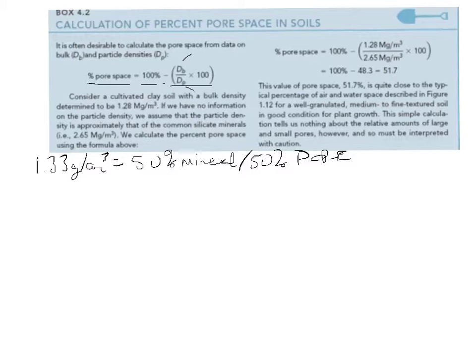And what this is doing is saying if we had 100% of the volume of the soil, we would subtract out the part of that soil that is actually solid material.